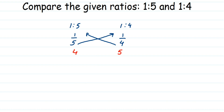Now compare the products: 5 is greater than 4, which means 1/4 is greater than 1/5. That's it — cross multiply the numbers and see which product is greater; that ratio or fraction will be greater. So 1 is to 4 is greater here.